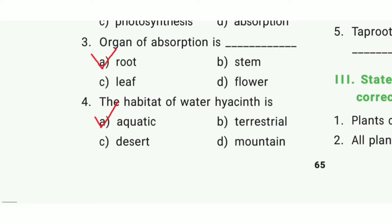Third question: The organ of absorption is? The answer is option A, root. Fourth question: The habitat of water hyacinth is? The answer is option A, aquatic.